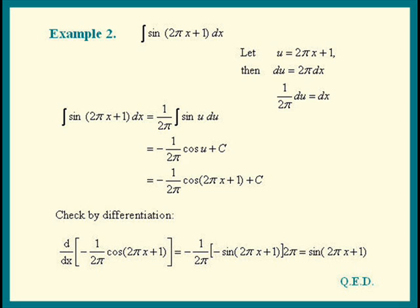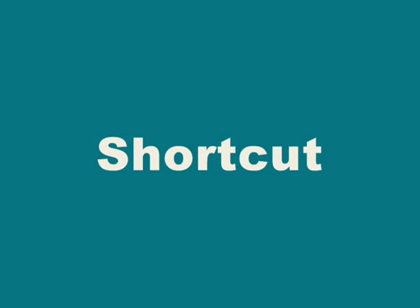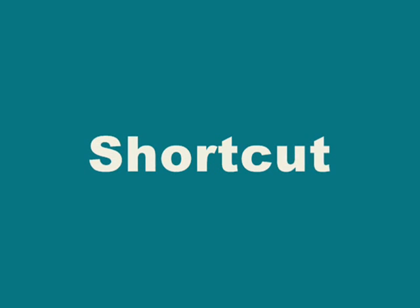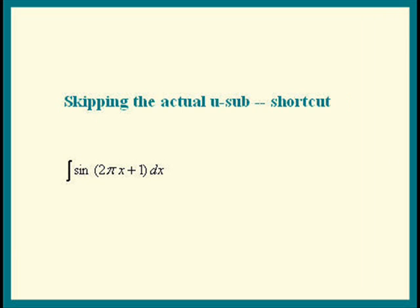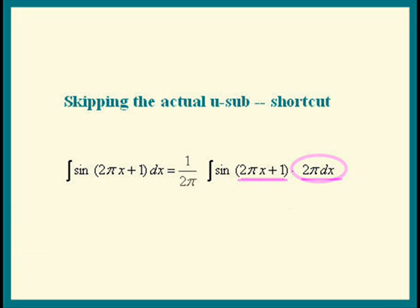Because u-substitution is one of the most basic methods, we should be able to do it without actually substituting u. I'm going to show you how to do this exact same problem without writing any u's — it's a shortcut that only takes 3 steps. The integral of sine of 2πx plus 1 dx — using the formula with u equal to 2πx plus 1, we note that du is 2π times dx, so we put 1 over 2π outside. The integral is now in the exact form of sine u du, which equals negative cosine u, giving us negative 1 over 2π times cosine of 2πx plus 1.